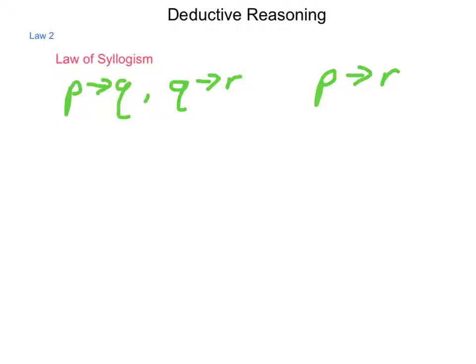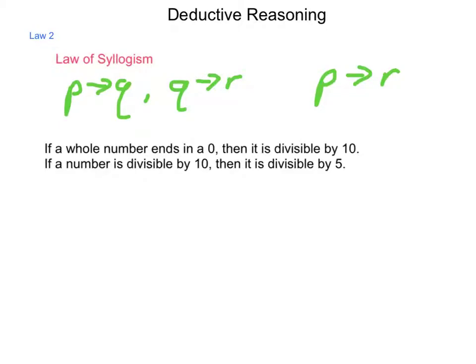What would this look like in a series of descriptions? Let's take a look at one. If a whole number ends in 0, then it's divisible by 10. If a number is divisible by 10, then it's divisible by 5.